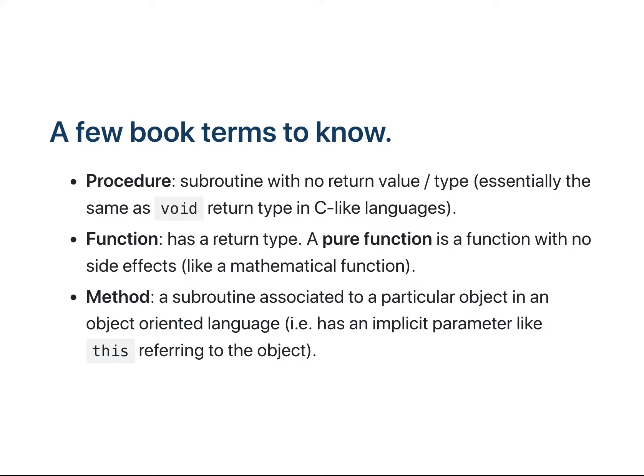A method is a subroutine associated with a particular object in an object-oriented language. It has an implicit parameter — like 'this' in Java — referring to the object, and there's always this object attached to the subroutine. That's what distinguishes a method from a normal function, which is why in Java you always hear 'method,' although a static method is a little different since it's at least part of a class.